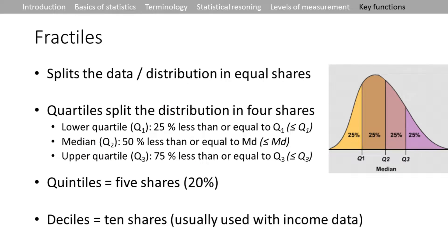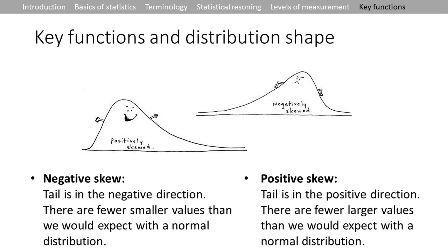Fractiles split the data or distribution into equal shares. Quartiles divide into four shares, quintiles into five shares, and deciles into ten shares. Deciles are usually used with income data. As shown in the picture, it's straightforward — just splitting data into equal shares.